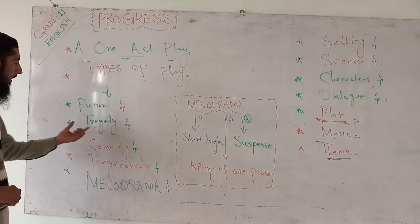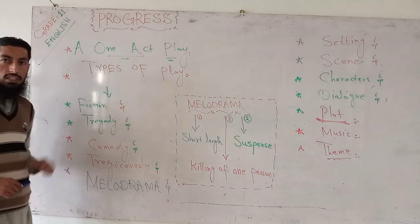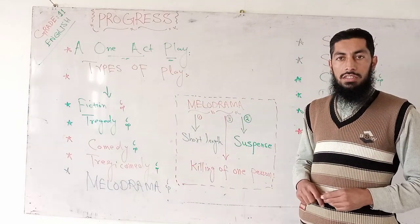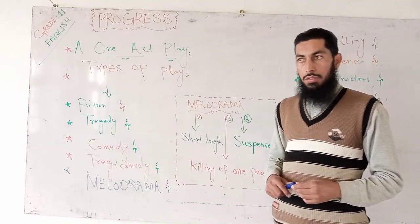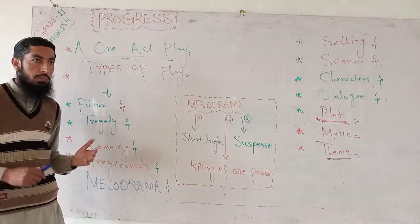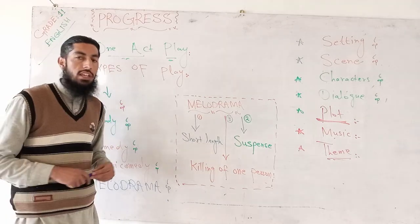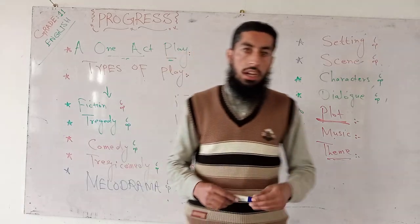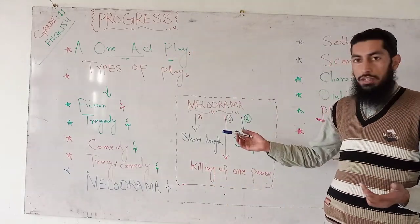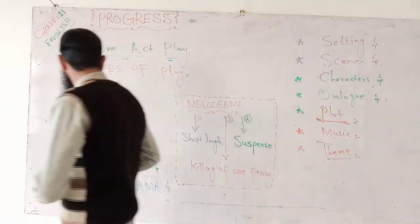Then comes tragedy. Tragedy is a sort of serious story which has a very sad, pathetic, tragic ending. Sometimes the hero, or the major figure, or the protagonist — who is close to the heart of the writer as well as the audience — is killed or meets fall and decline.